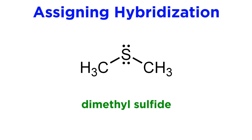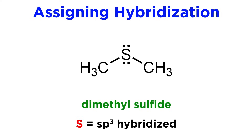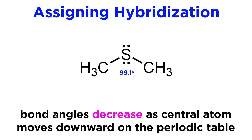Finally, analogous to oxygen is sulfur. We can look at something like dimethyl sulfide, where the sulfur will also be sp3 hybridized, with two bonds to carbon atoms and two lone pairs. Here, we begin to see a deviation from the bond angles predicted by VSEPR theory, as this CSC bond angle is about 99.1 degrees. As we move down the periodic table, the bond angles predicted by VSEPR theory become less and less reliable, so that is something to keep in mind.